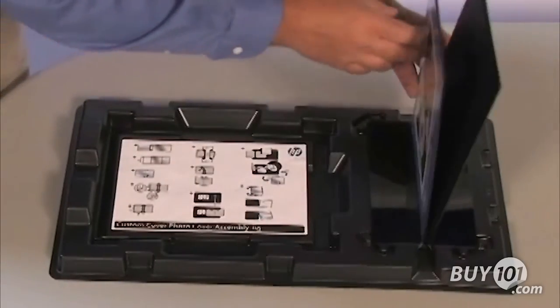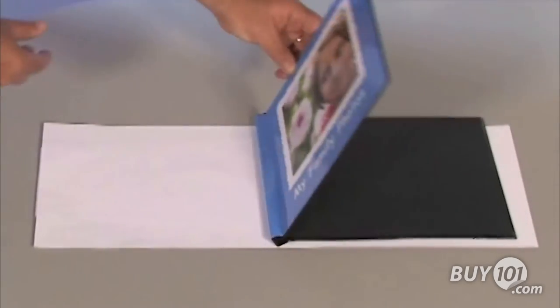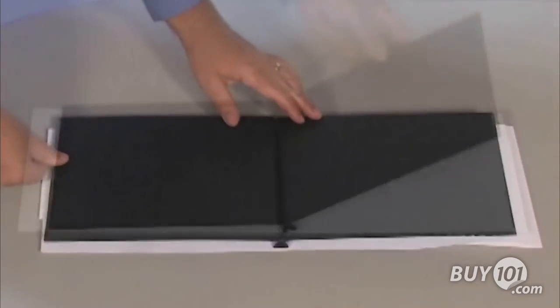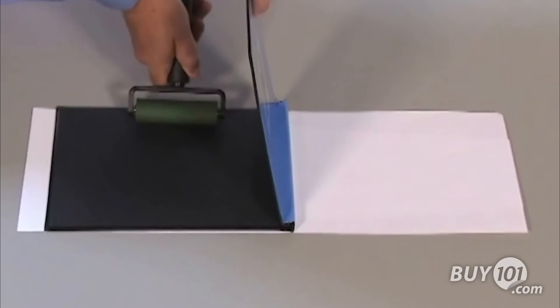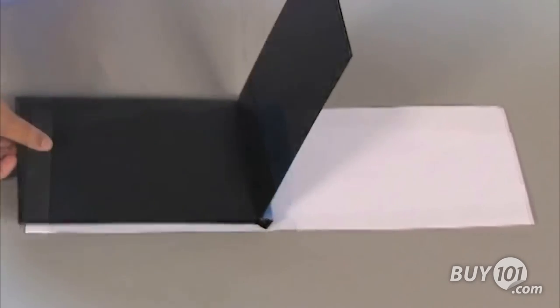Remove the cover from the jig and place it on a clean work surface. Roll over the inside of the front and back cover in turn, pressing firmly. Be careful not to bend the cover.